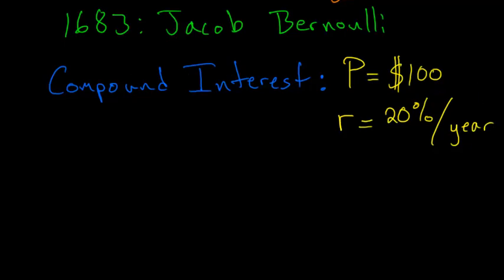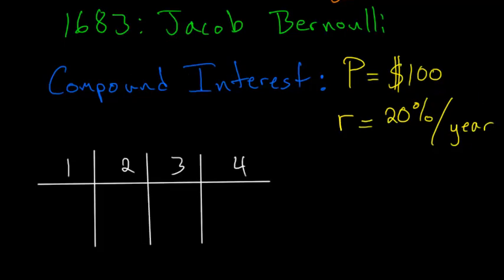So if I quickly construct a table, we can look at how this investment of $100 grows every year. So after one year, we will collect 20% of this original principal and add it to the principal. So 20% of $100 is just $20. So after one year, we're up to $120.